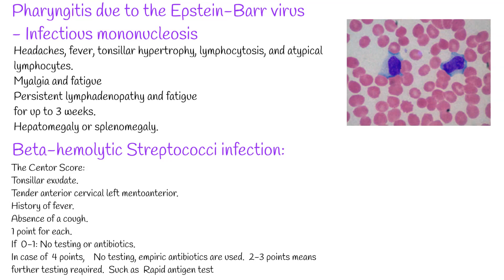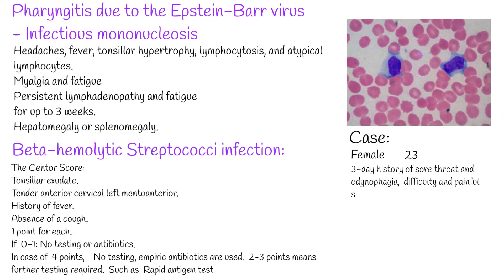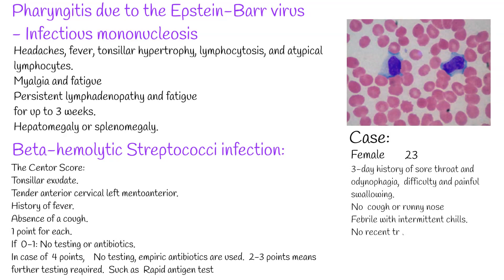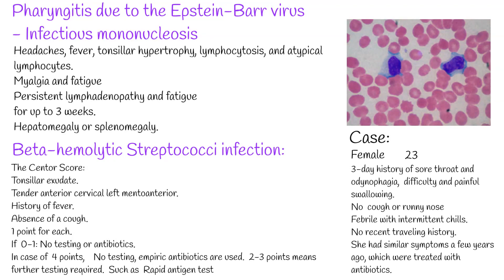Bacterial pharyngitis caused by streptococcus can occur among adults also. For example, a 23-year-old female with a 3-day history of sore throat and odynophagia — difficulty and painful swallowing. She denies having a cough or runny nose but has been febrile with intermittent chills and no recent travel history. She had similar symptoms a few years ago, which were treated with antibiotics. Given the fever and absence of cough and rhinorrhea, bacterial pharyngitis is suspected.